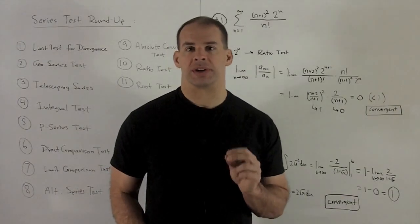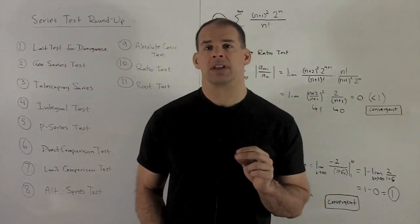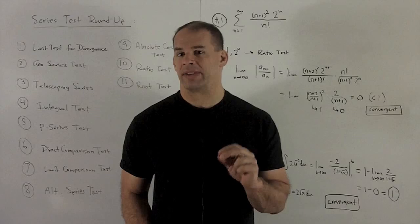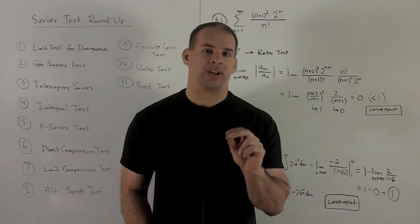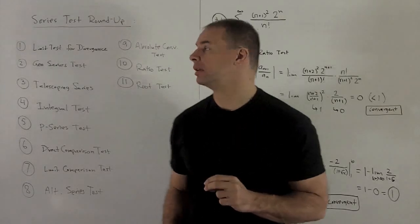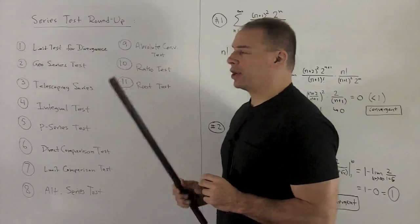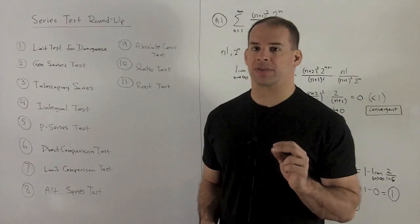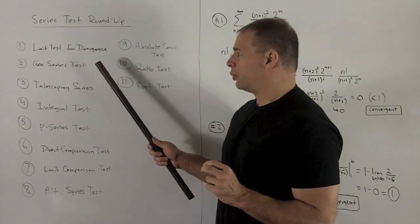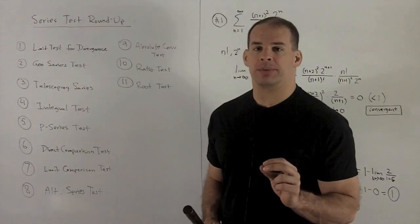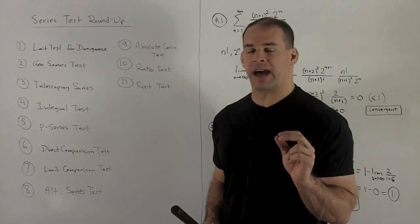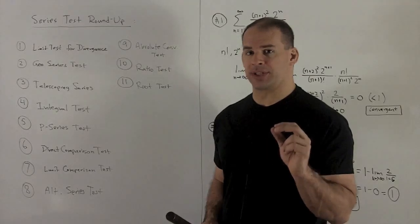Let's do a roundup of all of our series tests. So first, let's just go through the list by name. We have 11 of them and we'll try to do an example for each one. Start. Whenever someone hands you a series, you always run it through the limit test for divergence. Then, we had geometric series test. So that's the business of being able to identify a series as geometric on sight.